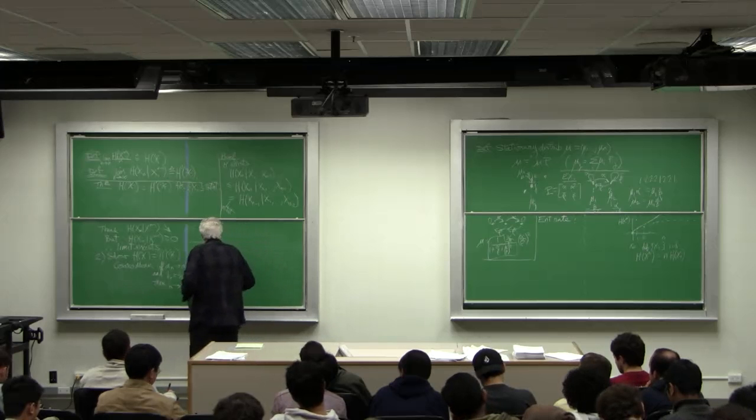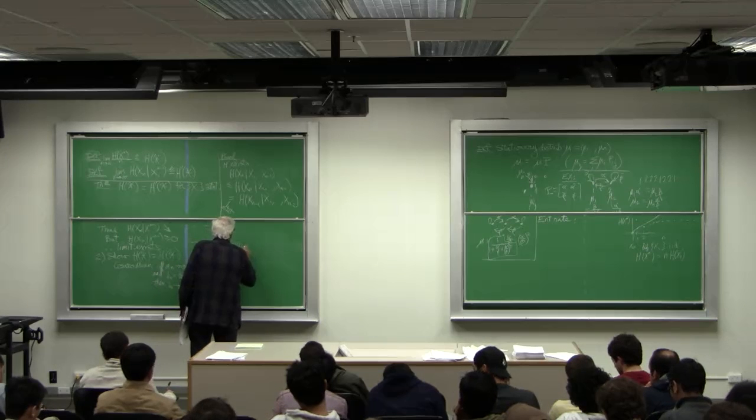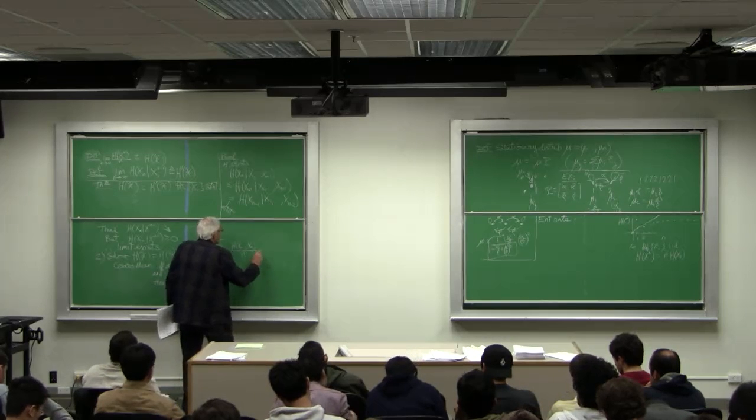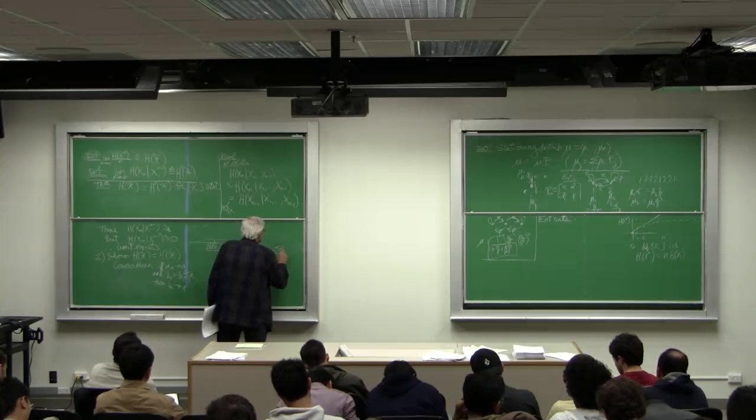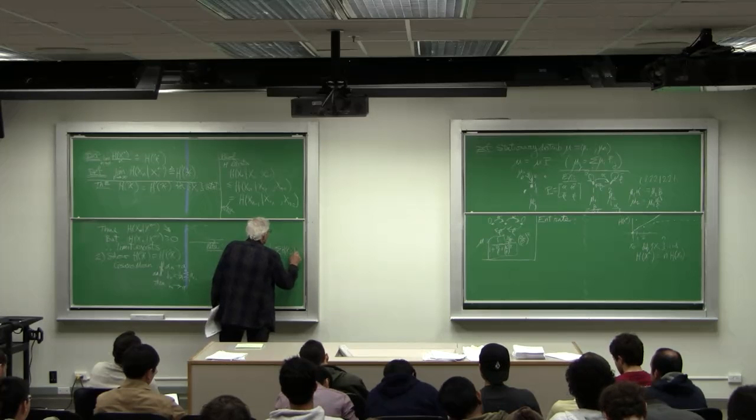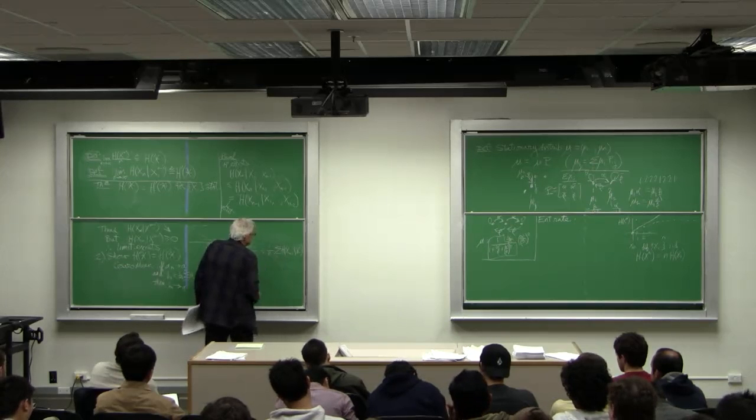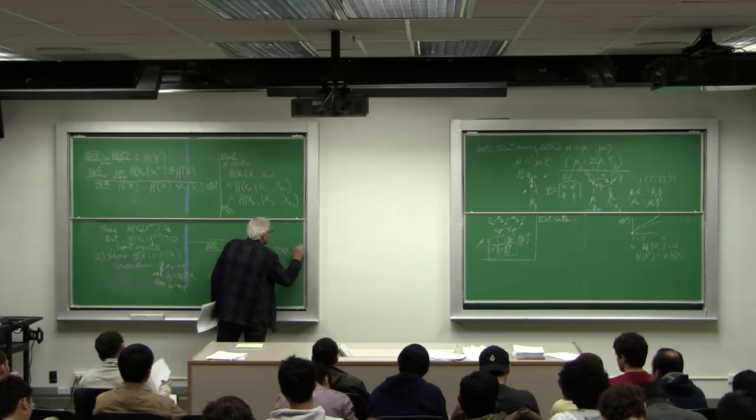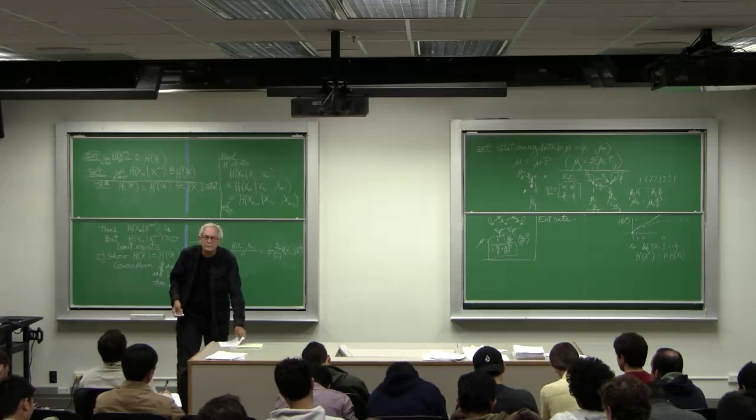But then we know that h of x1 through xn over n is equal to 1 over n summation of h of x_i plus 1 over x_i, x_i minus 1, from i equals 1 to n.